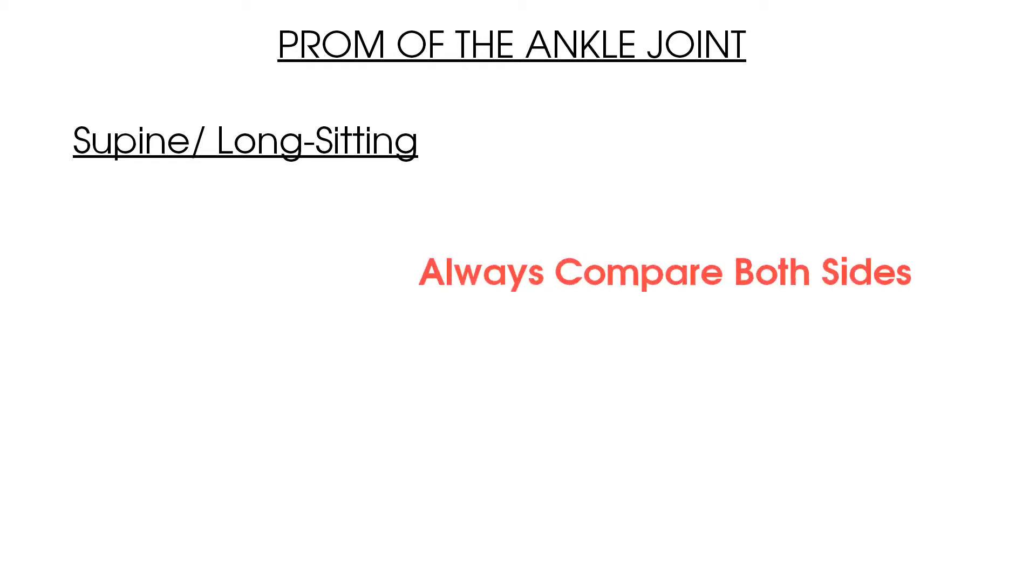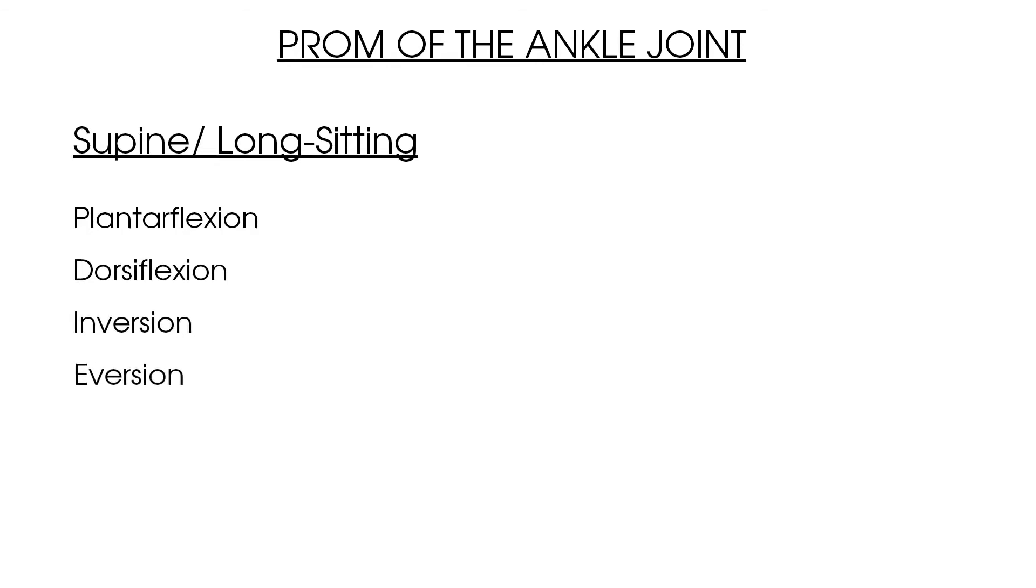Let's summarize this video on passive range of motion of the ankle joint. First, complete your passive range of motion with the patient in a supine or long sitting position. When completing your passive tests be aware of your handling for each movement and make sure to compare the affected and unaffected sides. Test your passive range of motion for plantar flexion, dorsiflexion, inversion, and eversion. And when completing your tests make a note of pain, range, and end feel.